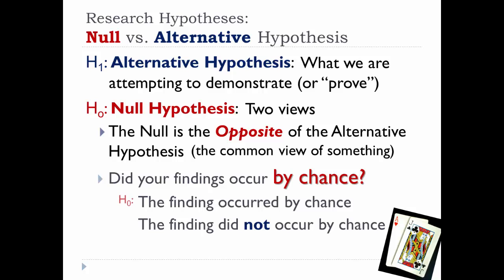In this view, the null hypothesis says that your findings occurred by chance. The alternative hypothesis is what you found was real. It did not occur by chance. In the case of playing cards, your alternative hypothesis would be that you are a good card player, and the null hypothesis is that your game results were just due to chance.